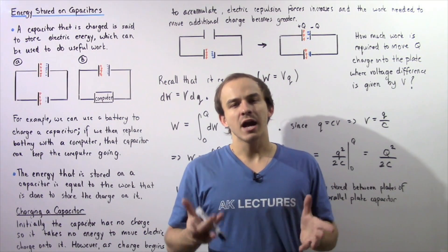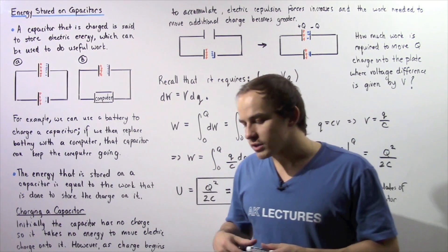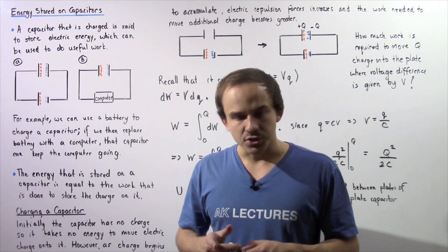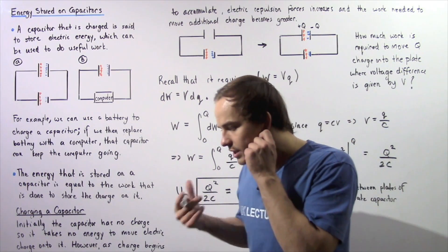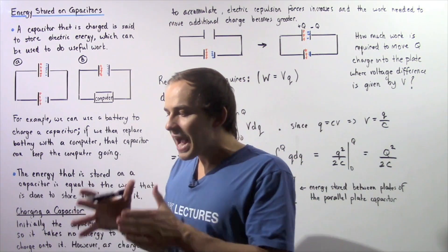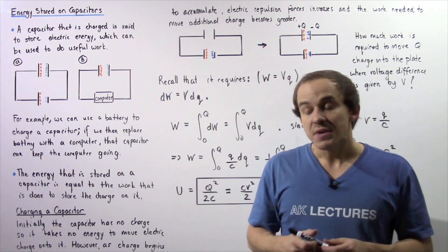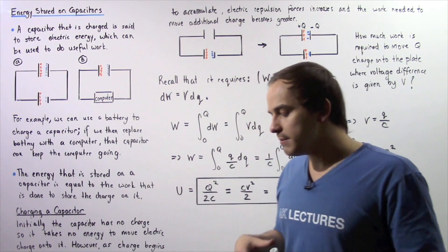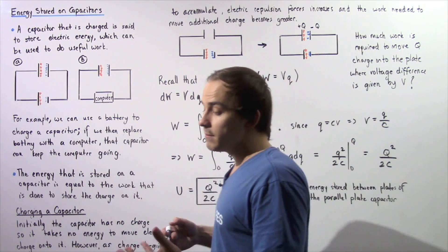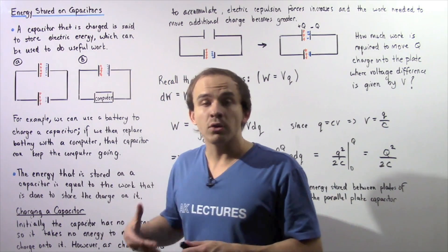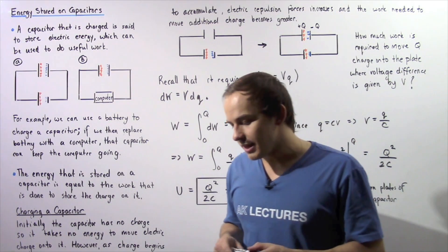Let's continue our discussion on electric charges that are stored on capacitors. Whenever electric charge is stored on a capacitor, what we're actually storing is electric energy. This electric energy can be used to do useful work — for example, it can be used to power devices that require electricity.